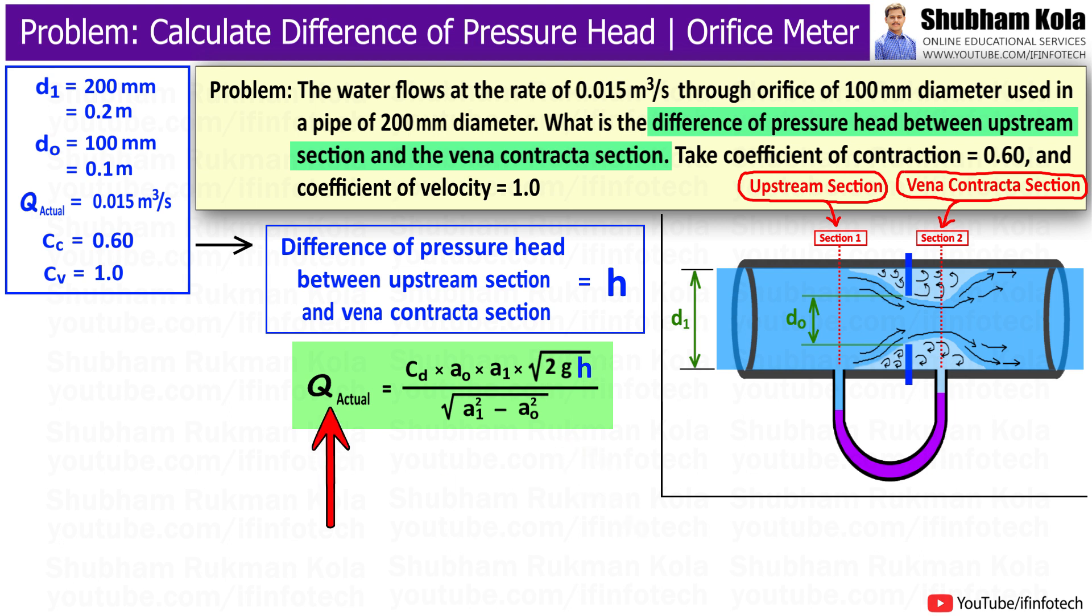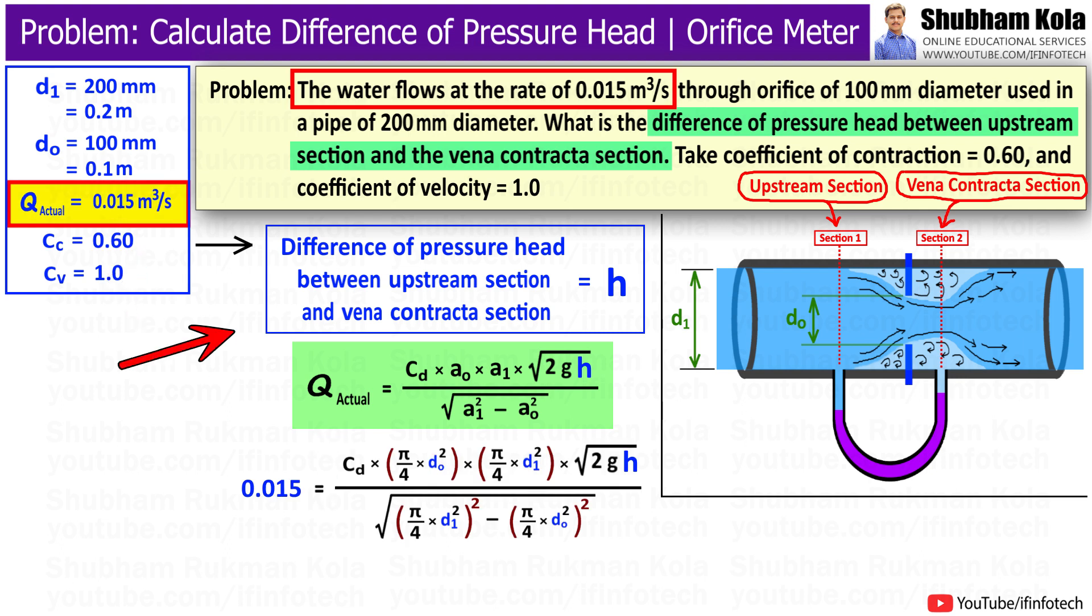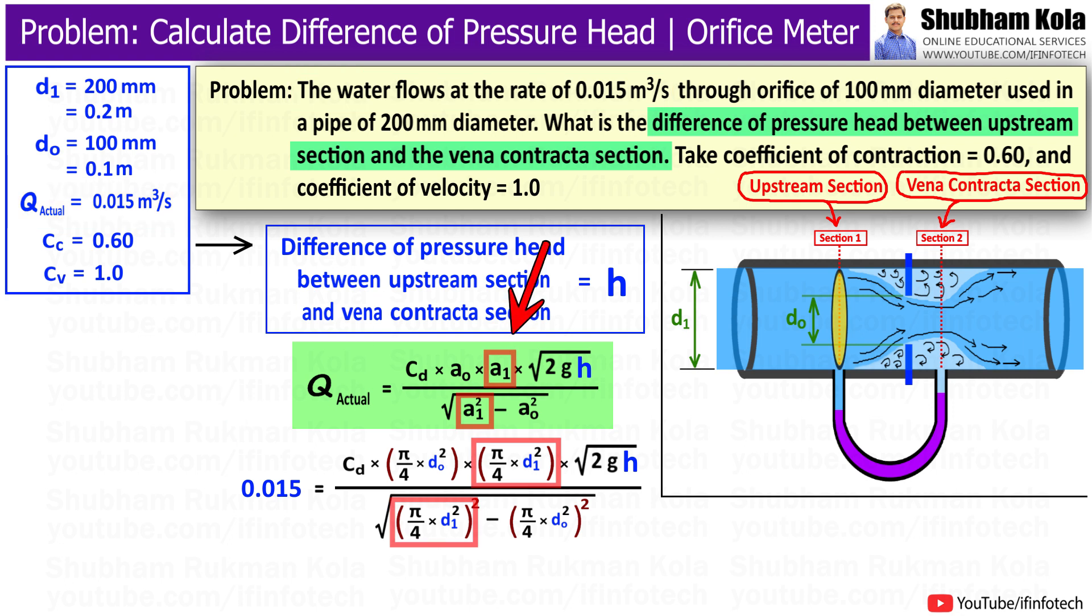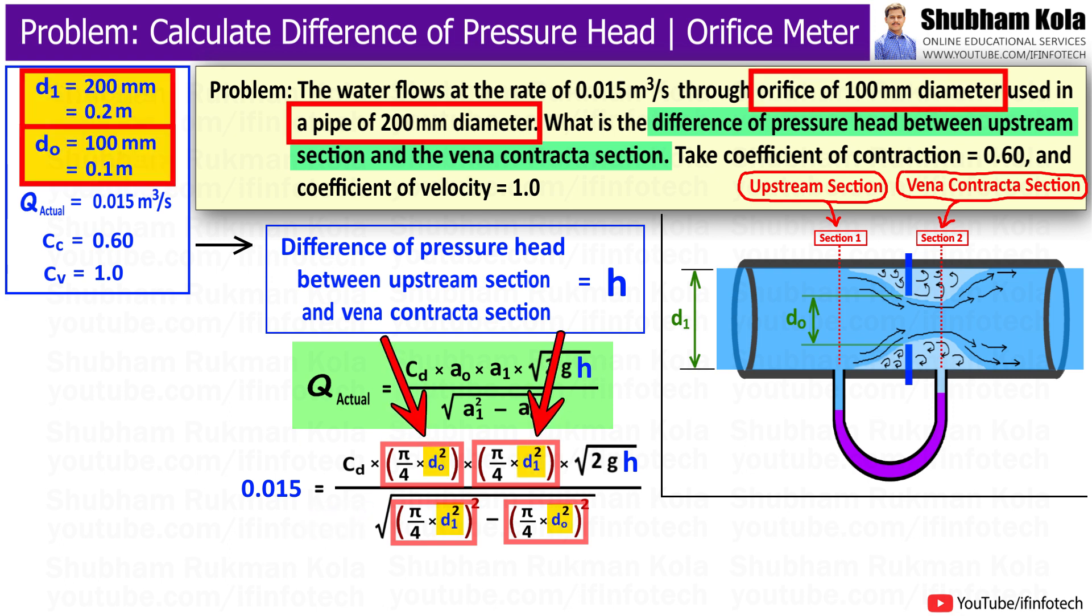In this formula, the discharge value is 0.015 m³ per second. Here, a₁ is the area of pipe at section 1 and a₀ is the area of orifice. Area equals π/4 times diameter squared, and the values of d₁ and d₀ have been given in the problem.